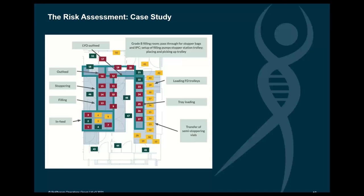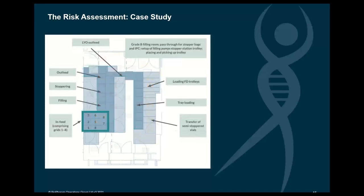This case study captures a step-by-step guide showing how the principles and recommendations from the risk assessment process can be applied, based on a company from the collaboration. It's a layout of a conventional filling line within a grade B room and a grade A filling line. The room is divided into grids for both grade A and grade B process step descriptions and functional sections. Each grid cell is given a unique identification number — for example, the in-feed functional section comprises grids 1 through 8.